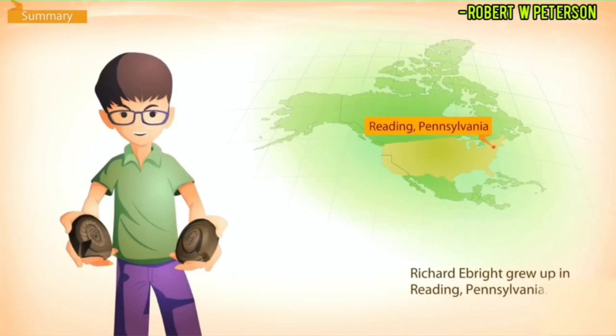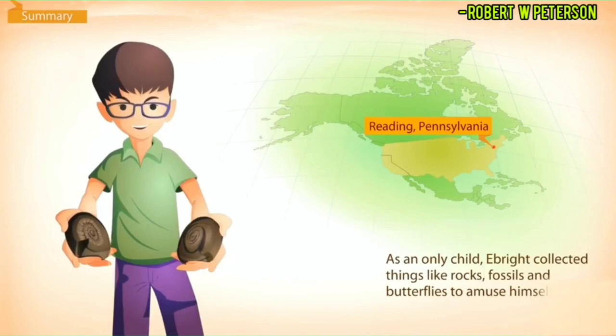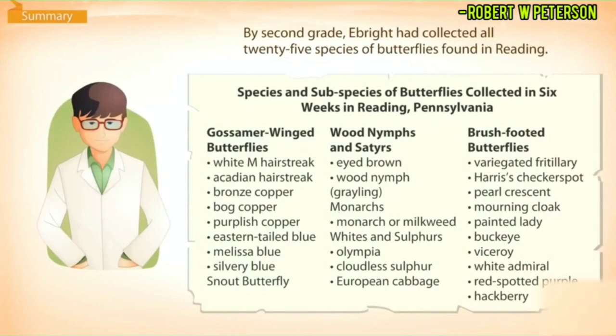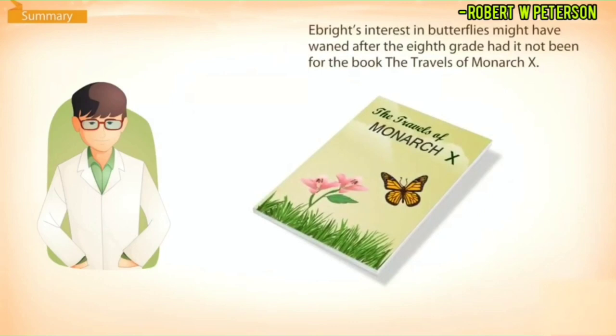Richard Ebright grew up in Reading, Pennsylvania, as an only child. Ebright collected things like rocks, fossils, and butterflies to amuse himself. By second grade, Ebright had collected all 25 species of butterflies found in Reading.